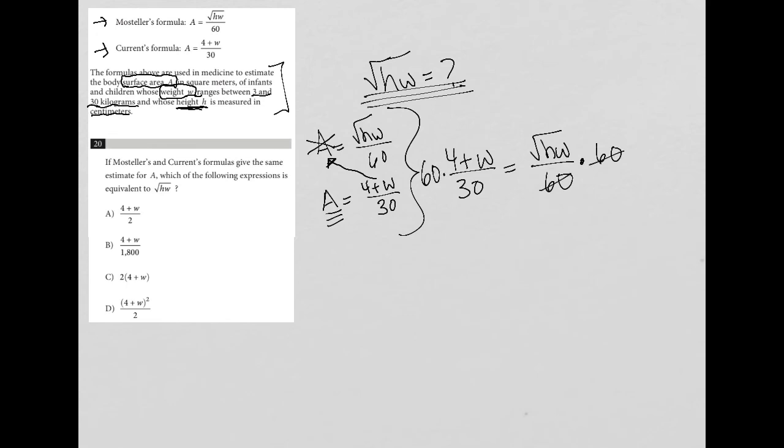So in doing so, the 60 crosses out on the right-hand side. And I'm going to just rewrite this and put this on the left-hand side and say the square root of HW equals 60 times that. In fact, I can reduce that. Let me get rid of this 60. So I can reduce this because 30 goes into 60 two times.